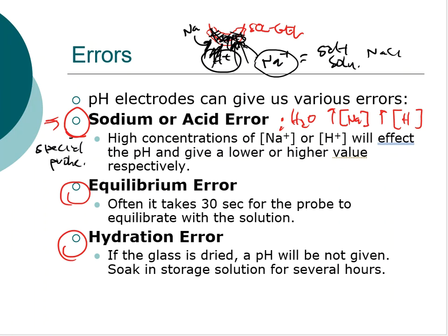There's nothing we can do to fix those problems unless we order a special probe for that application. For example, in the food industry with heavy salt concentrations, you may need a special pH probe that can handle high sodium. The same applies in strongly acidic environments, like companies using chromic acid or sulfuric acid — those require a correct probe with the right range to accurately measure those solutions.